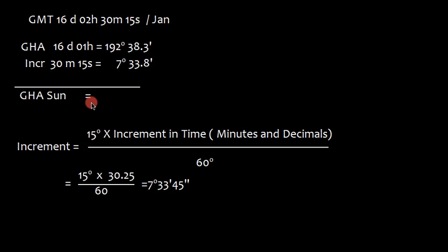As the earth is rotating west to east, apparent motion is from east to west and GHA is measured in the westerly direction. So GHA continuously keeps increasing. The increment here, the value is 7 degrees 33 minutes and 45 seconds which here we take 7 degrees 33.8 minutes.